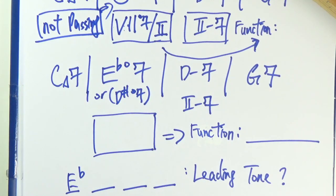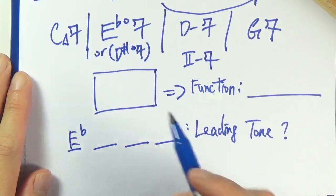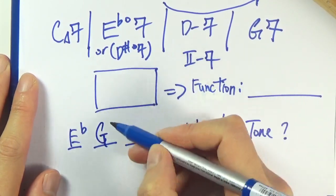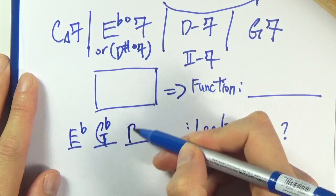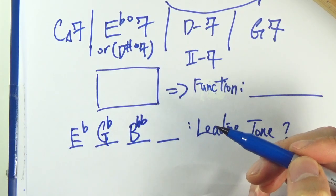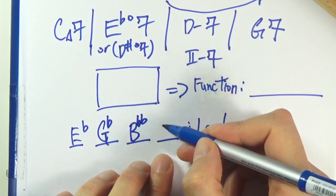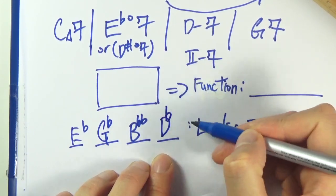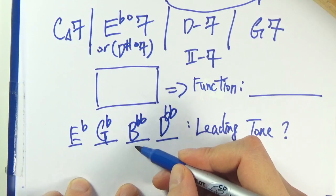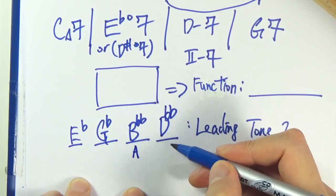So probably it is functioning as a passing chord, but we have to check. Let's see if it has the leading tone of D, so E flat, G flat, flat 3, flat 5, that would be a B double flat, and then a double flat 7 would be a D double flat. So B double flat is really just an A. D double flat is a C.